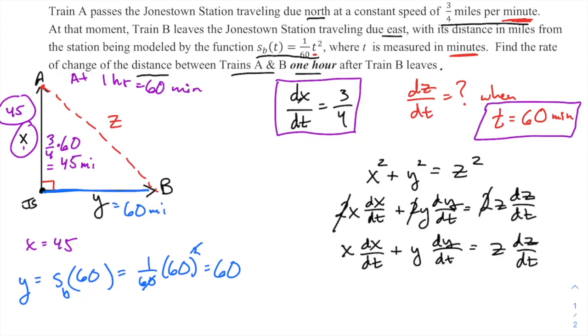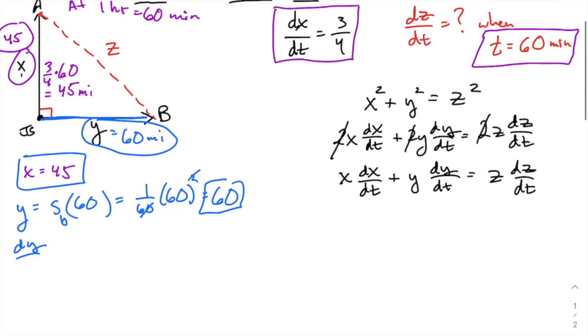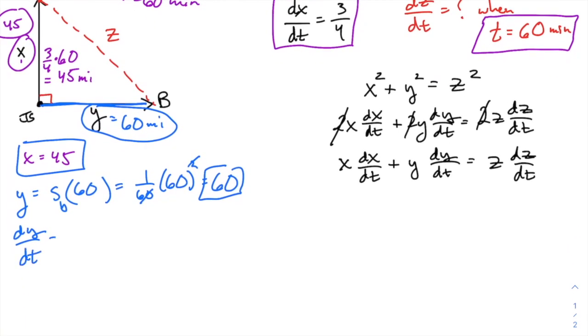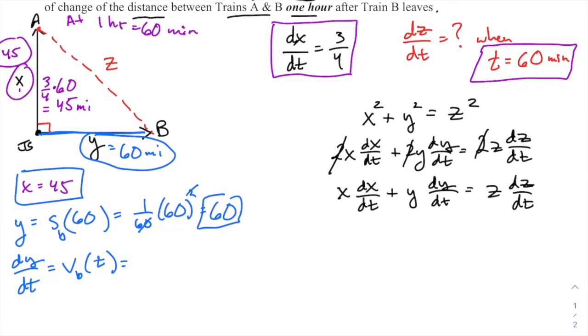So all right, I'm getting some stuff done here. I've got x now, I've got dx/dt, I've got y. Y is 60 miles. And I need dy/dt and I need z. Those are the last two things I need. It doesn't matter which one you want to find first. If you want dy/dt—or in other words, the derivative of y or the derivative of this position function they gave you, which would be the velocity—if the function is (1/60)t², then it would be 2 times (1/60), which would be (1/30) of t.